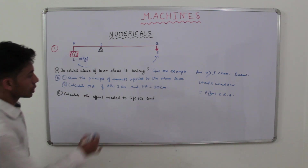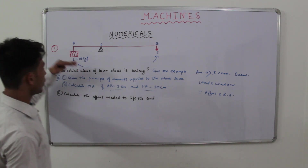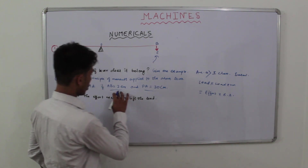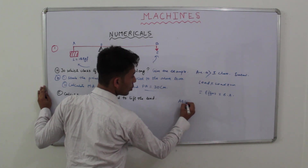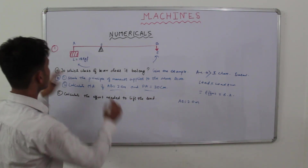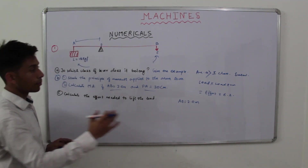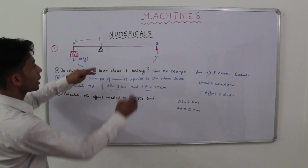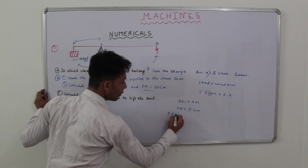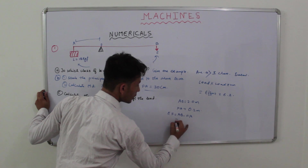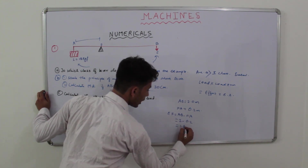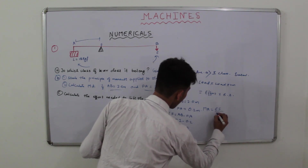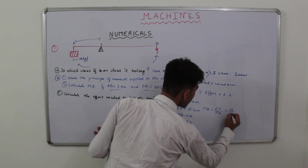Next, we need to calculate the mechanical advantage. The given data: load = 18 kgf, AB (total length) = 2 meters, and FA (load arm) = 20 cm = 0.2 m. The effort arm EF = AB − FA = 2 − 0.2 = 1.8 m. So mechanical advantage = effort arm / load arm = 1.8 / 0.2.